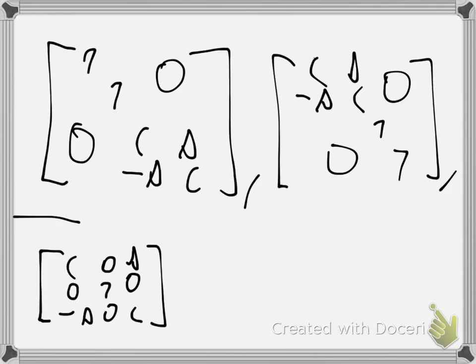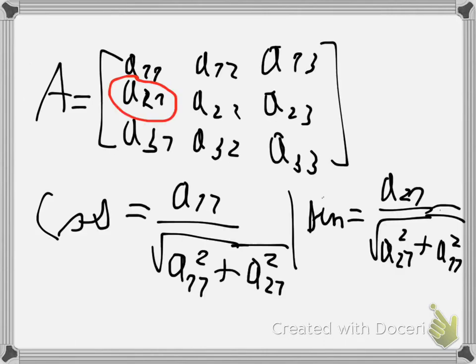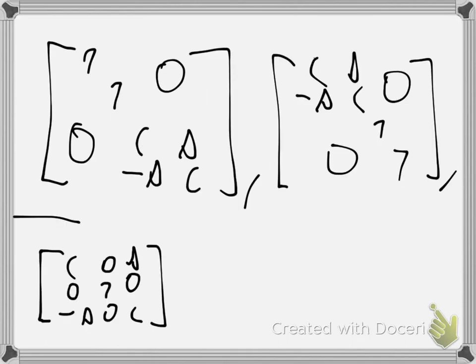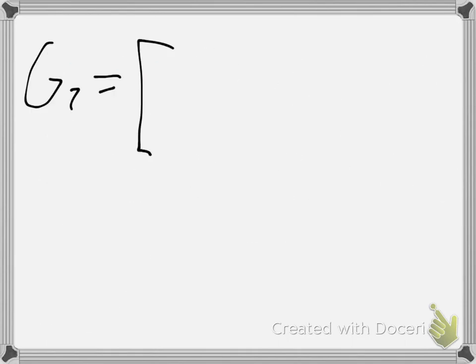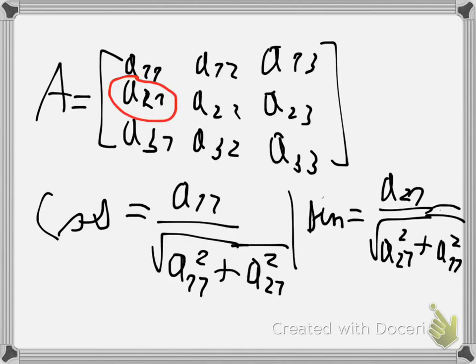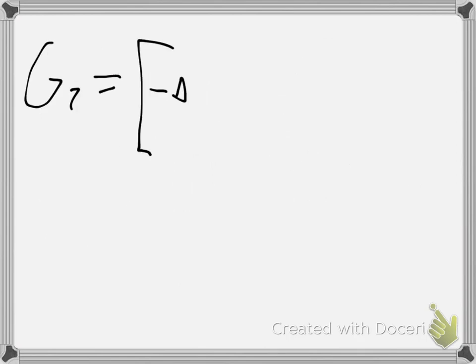Then you plug them into your rotation matrix. Here we are in three dimensions, so our first Givens Rotation will also be in three dimensions. The minus sign in the formula will always be in the position of the element we want to eliminate. So if the element we want to eliminate is the second row, first column, the minus sign goes there. The cosine goes on the top, and there will be a 1 in the diagonal.